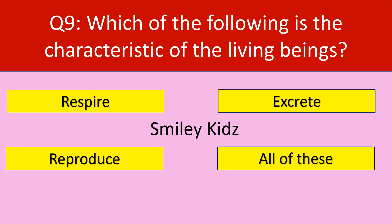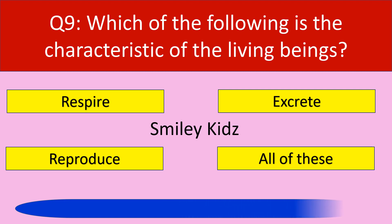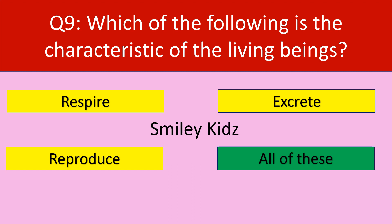Question number 9. Which of the following is the characteristic of living beings? Options are: respire, excrete, reproduce, all of these. Your time starts now. Your time is up. The correct answer is all of these. Living beings respire, excrete and reproduce.